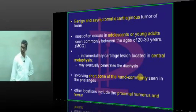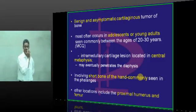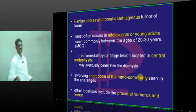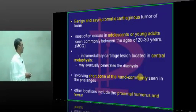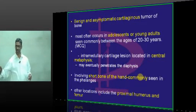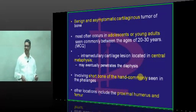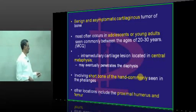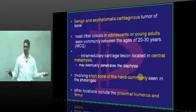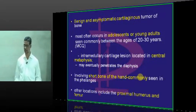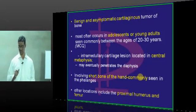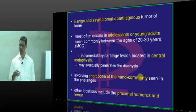Enchondroma is a benign asymptomatic cartilage lesion in bone, occurring in adolescents or young adults between the age of 20 and 30. It is an intramedullary cartilage lesion located in the central metaphysis, and may eventually penetrate into the diaphysis. Short bones of the hand are commonly seen; other locations include long bones like the proximal humerus and femur, where unicameral bony cysts are also common.